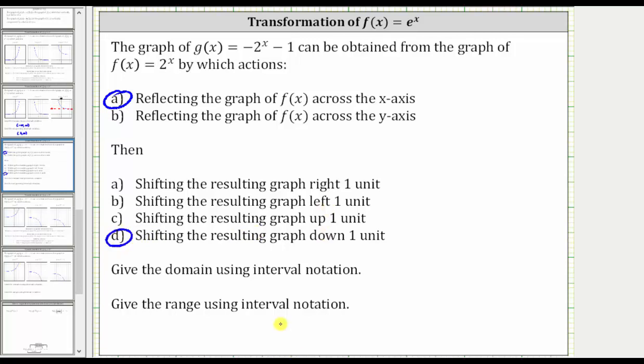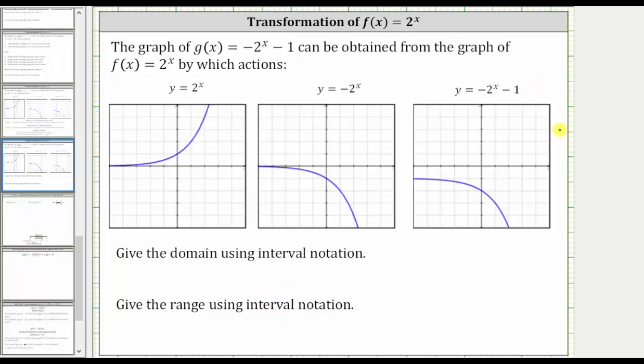And now we're asked to give the domain and range using interval notation. Let's go back and look at our graphs again. The graph of g of x is the graph here on the right which we can obtain by taking the graph of y equals 2 to the x, reflecting it across the x-axis, and then shifting it down 1 unit.